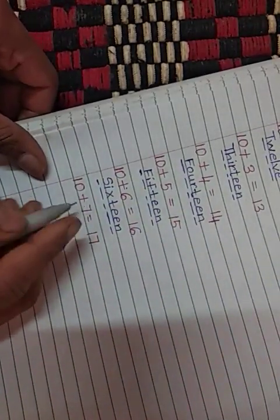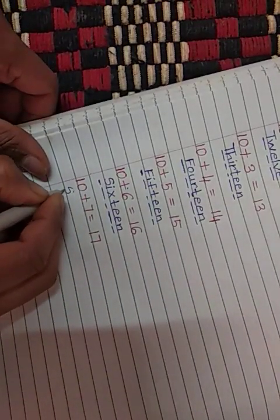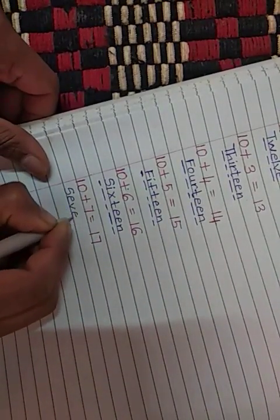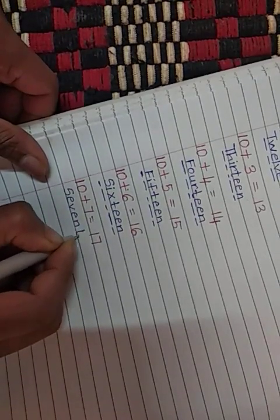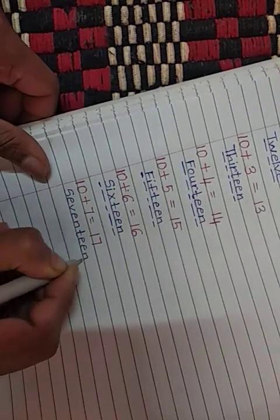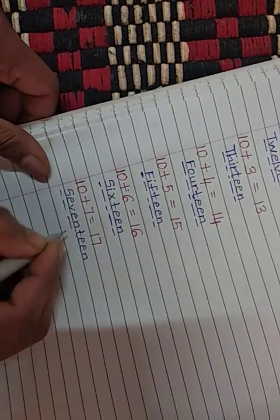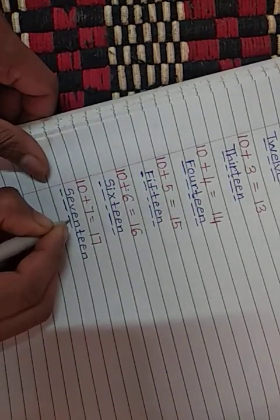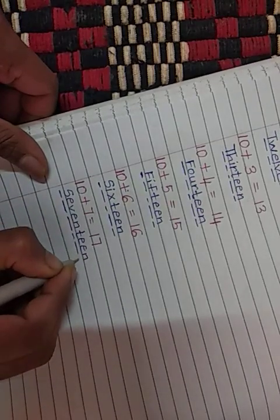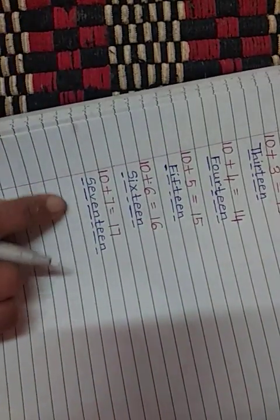Now we will write here. S-E-V-E-N, 7 spelling, and teen: T-E-E-N. Seven and teen makes seventeen. S-E-V-E-N-T-E-E-N, 17.